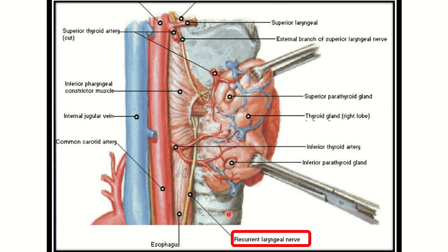We can see the trachea here, and the thyroid gland lies anterior to the trachea. Posterior to that, there is a structure — the upper part is the pharynx and the lower part is the esophagus. We can see a nerve present between the trachea and esophagus, within that groove. This nerve is the recurrent laryngeal nerve.